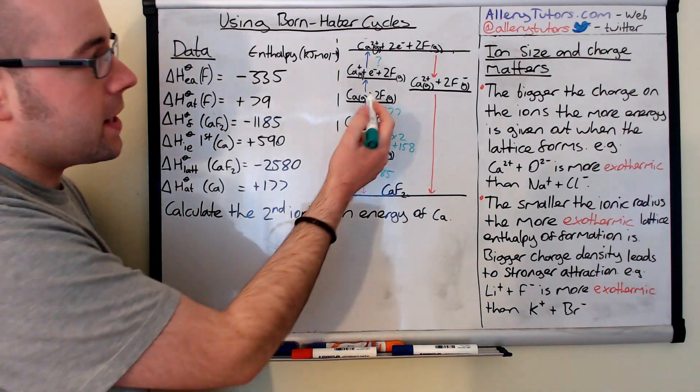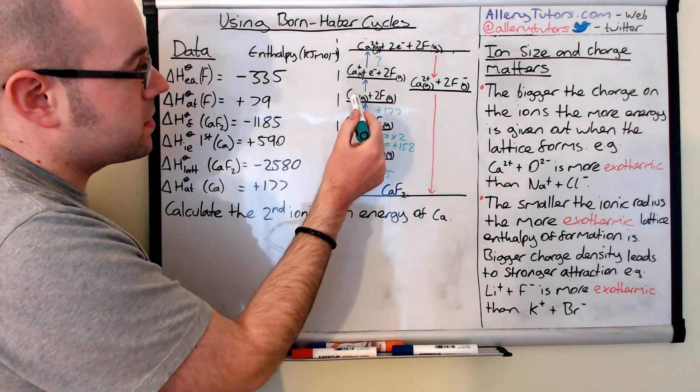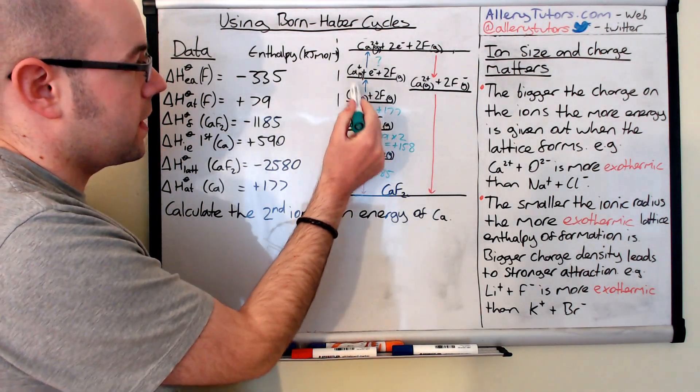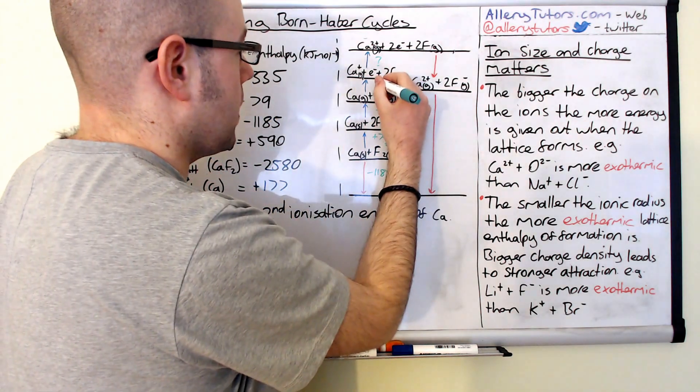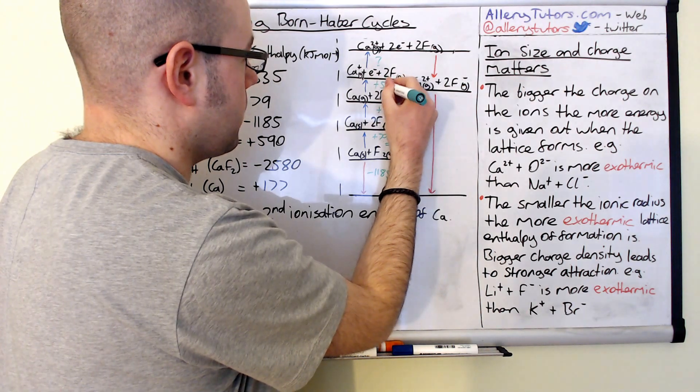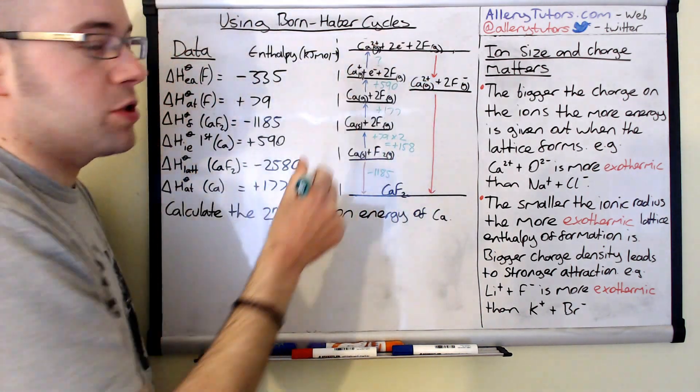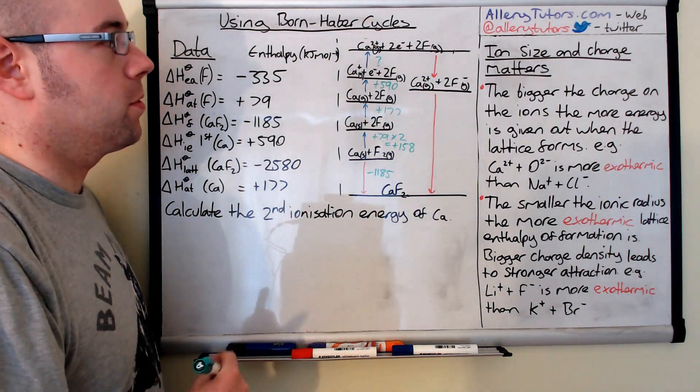Okay the next one is and you can see here this is the first ionization energy of calcium. So the first ionization energy of calcium is plus 590. So we're going to put that there. Plus 590. Right this is the one we don't know but that's what we're trying to work out. So we'll come back to that.